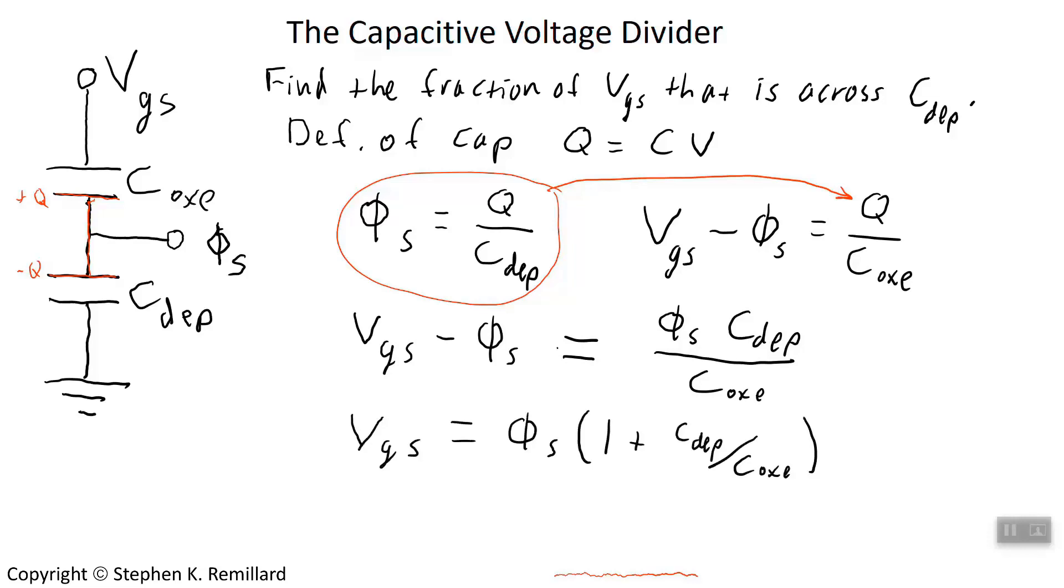To do that, you've got to get phi sub s all by itself. We'll move this phi sub s over to the other side. Now it's starting to look alone. Now take what's in the parentheses here and move them back over to the other side, and you've solved for the potential difference across the depletion capacitor, phi sub s.